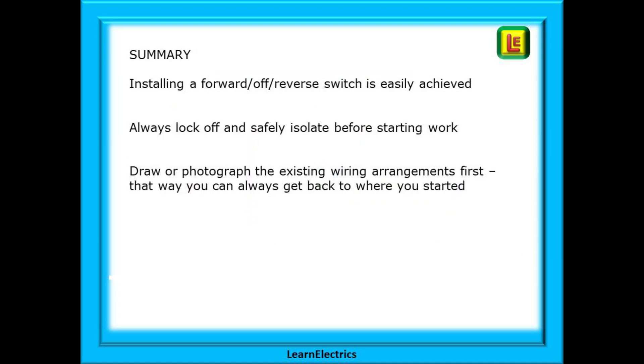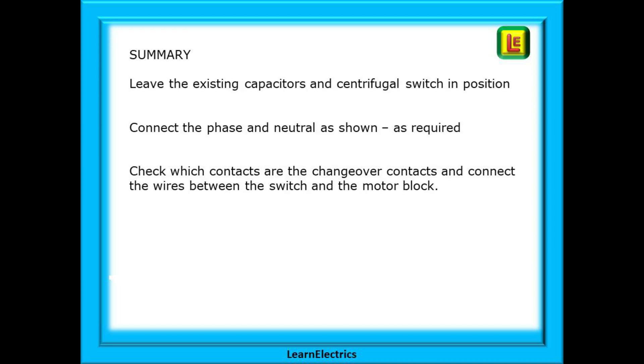A little summary of what we have done. Installing a forward off reverse switch is easily achieved. Always lock off and safely isolate before starting work. Draw or photograph the existing wiring arrangements first. That way you can always get back to where you started. Leave the existing capacitors and centrifugal switch in position. Connect the phase and neutral as shown as required. Check which contacts are the changeover contacts and connect the wires between the switch and the motor block. And that is it. Installing a forward and reverse switch really is a simple task. As always proper preparation is essential.